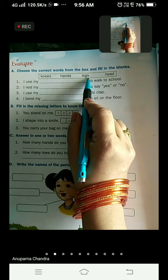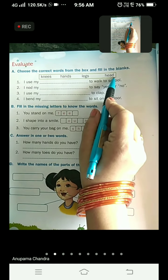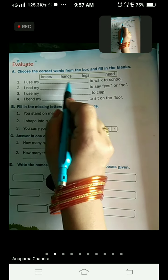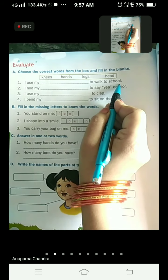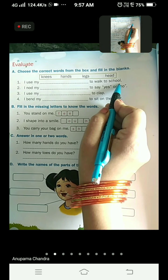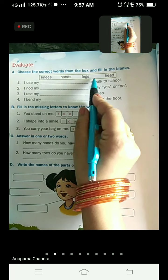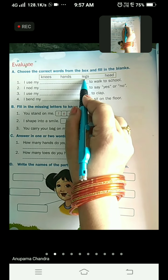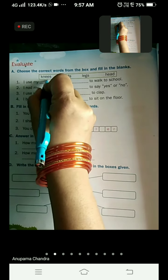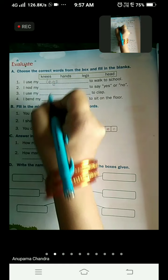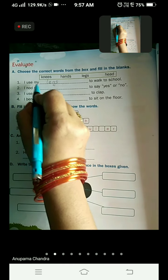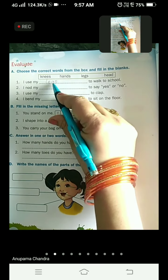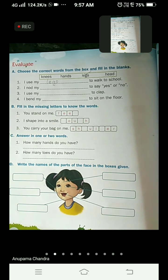Knees, hands, legs, head. And now come to the first one. I use my dash to walk to school. What do you use to walk? Which part of the body? The answer is legs. So we are going to write here L E G S legs. And as you have written legs here, so you are going to tick it in the box.